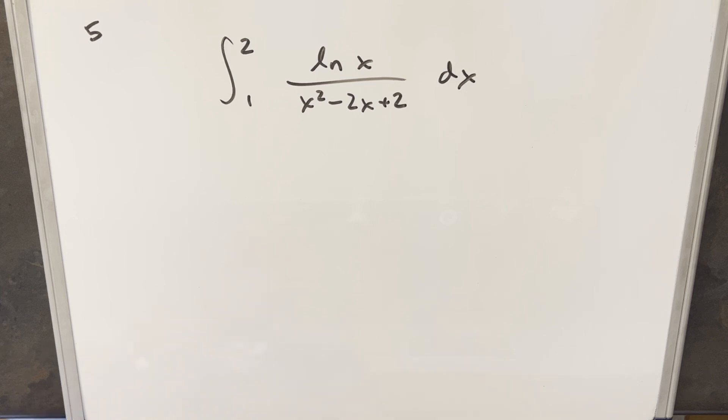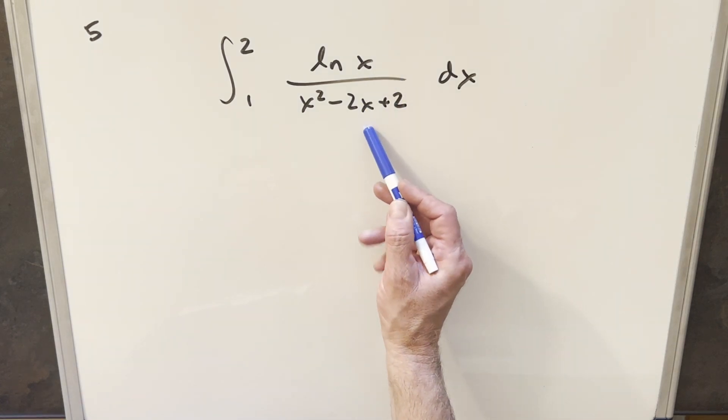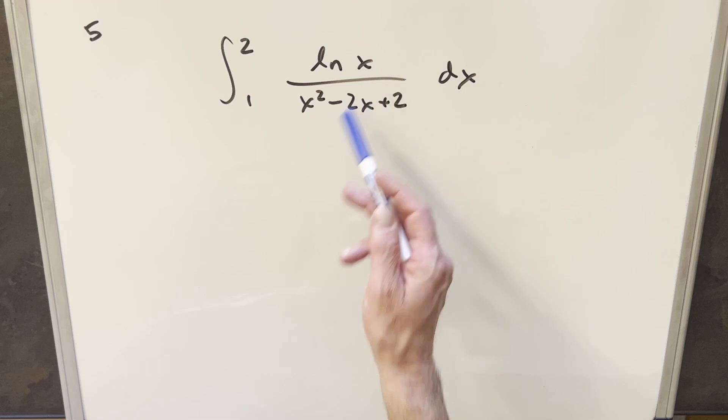At first it was really hard for me to imagine exactly how natural log x is going to work with this. We know the derivative of natural log x is 1 over x, but that's kind of a long way from what we have here.